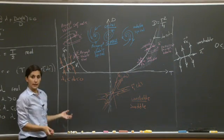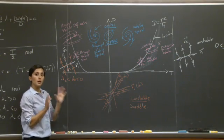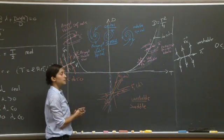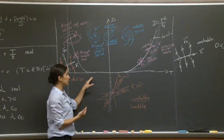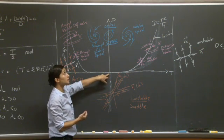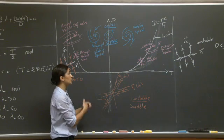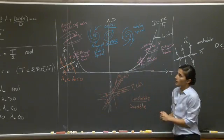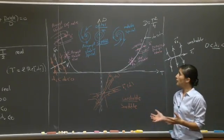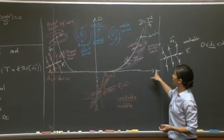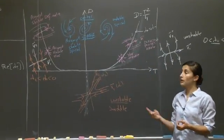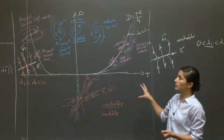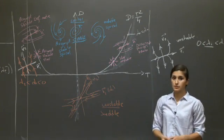That roughly completes the diagram. A few borderline cases weren't detailed — for example, when the determinant equals zero — and those will be discussed in another recitation. The key points were: understanding the trace-determinant diagram, deducing the nature of eigenvalues from T and D and their signs, and placing the different phase portrait structures correctly on the diagram.